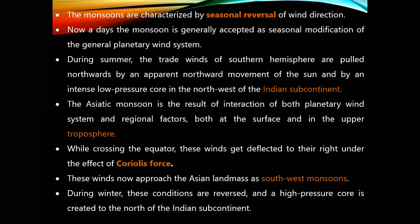The monsoon phenomenon was also ascribed to the seasonal shifting of tropical and subtropical wind belts. But there are certain peculiar aspects of the monsoon circulation, such as its abrupt transition from dry to wet season and the variability of rainfall associated with it, which cannot be fully explained by the aforesaid causes. The monsoons are characterized by seasonal reversal of the wind direction. Nowadays, the monsoon is generally accepted as a seasonal modification of the general planetary wind system.